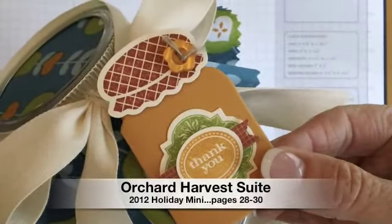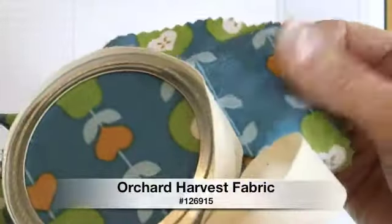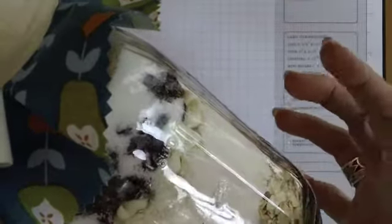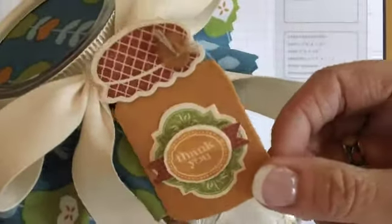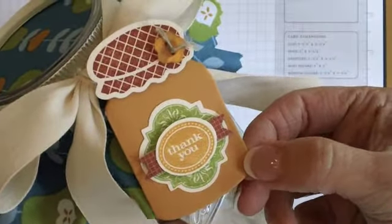This is one of the tags that I made and I even embellished the jar with some of our Orchard Harvest fabric. This is a layered cookie recipe that was featured in our August Stampin' Success magazine and I'll also post that to my blog so that you'll have the recipe.